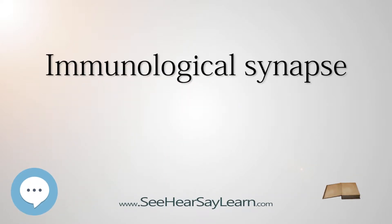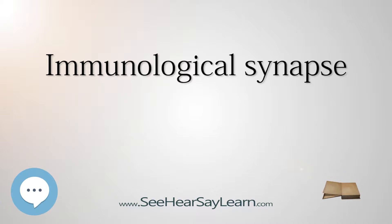In immunology, an immunological synapse, or immune synapse, is the interface between an antigen-presenting cell or target cell and a lymphocyte such as an effector T-cell or natural killer cell. The interface was originally named after the neuronal synapse, with which it shares the main structural pattern. Immunological synapse consists of molecules involved in T-cell activation, which compose typical patterns called activation clusters. Immunological synapse is the subject of much ongoing research.